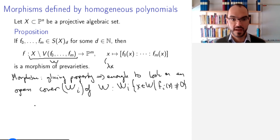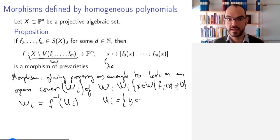Why did I take that? Well, this is because Wᵢ is going to be the pre-image of Uᵢ. Remember, this is the sets Uᵢ. These are the sets of all y in ℙᵐ such that yᵢ is different from 0.